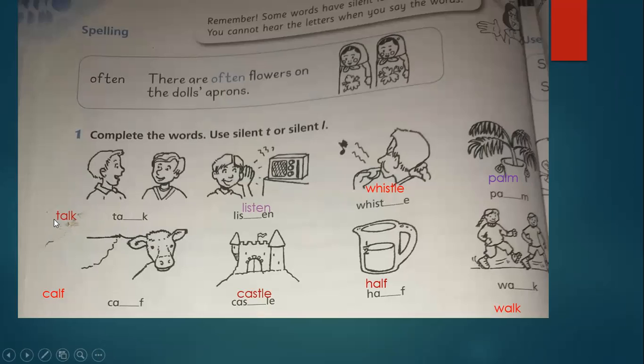Look, here we have talk - we write L but we don't pronounce it. Half - we write L also, we don't pronounce it. Walk - the same thing. I will read the words again: talk, listen, whistle, palm, cough, castle, half, and walk. Here we are going to write the word. Write the silent letter in this word.